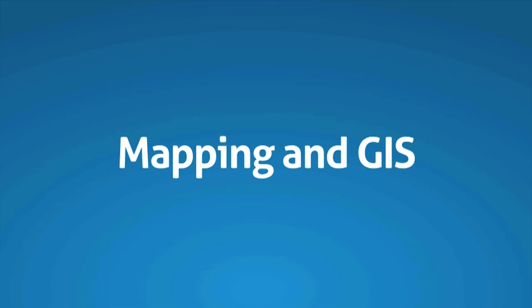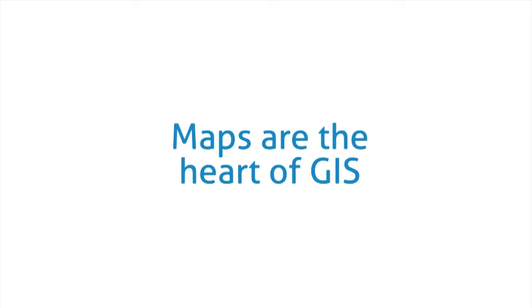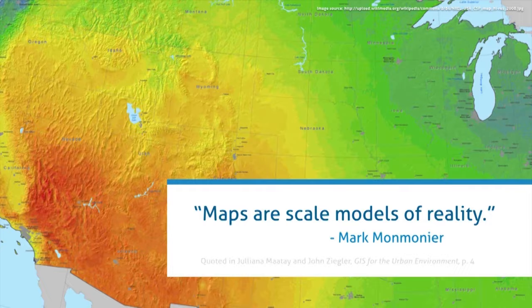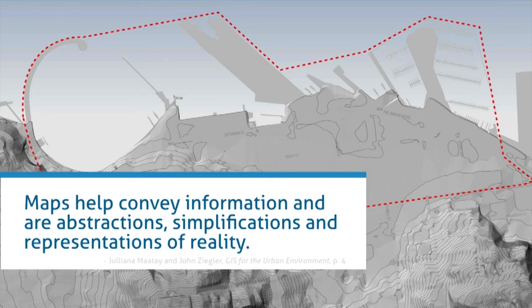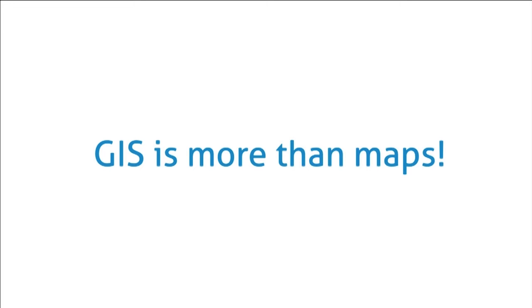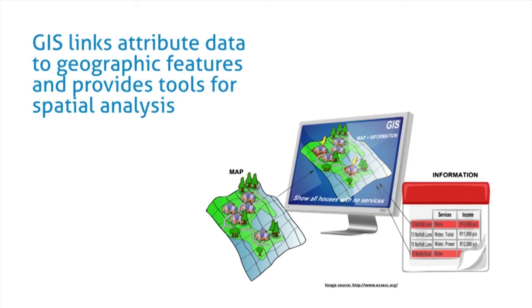Maps are the heart of GIS. GIS is all about spatial information, and maps are scale models of reality that help convey information — they are abstractions or simplifications of the real world. But GIS is more than just maps because it includes attribute data tied to geographic features and tools for spatial analysis, along with the database and the ability to do more sophisticated analysis.